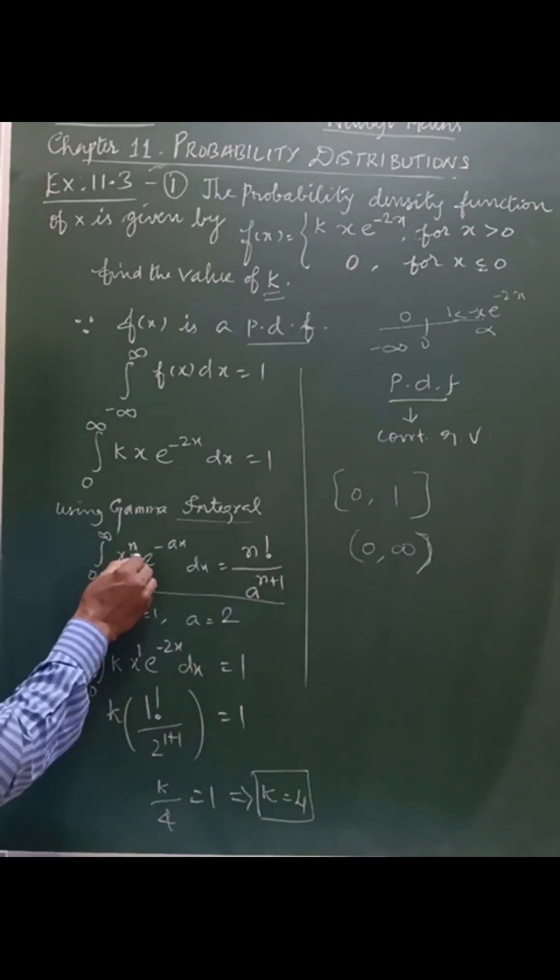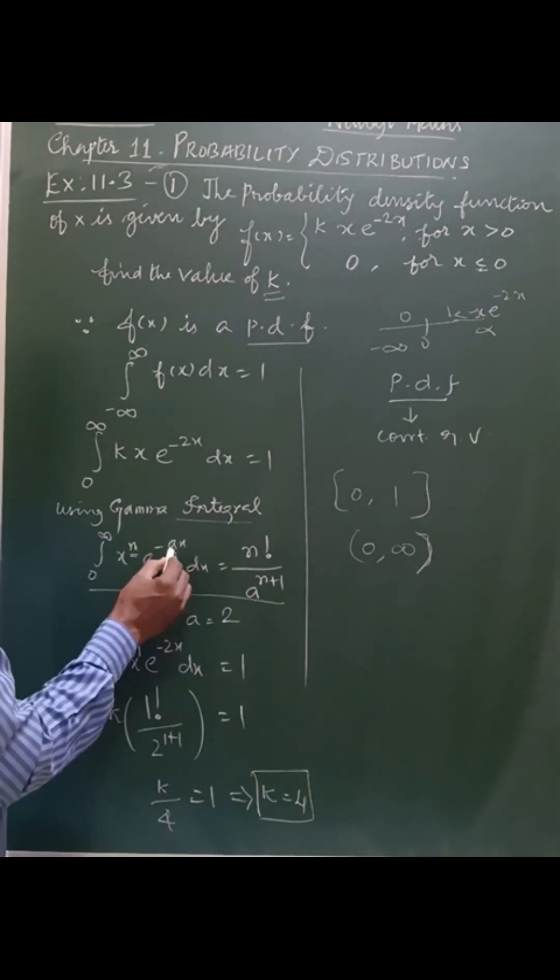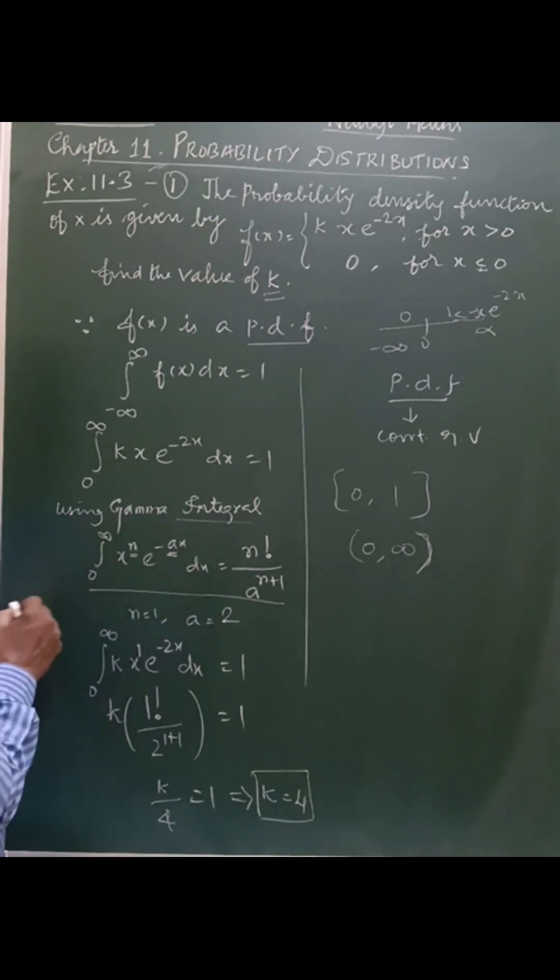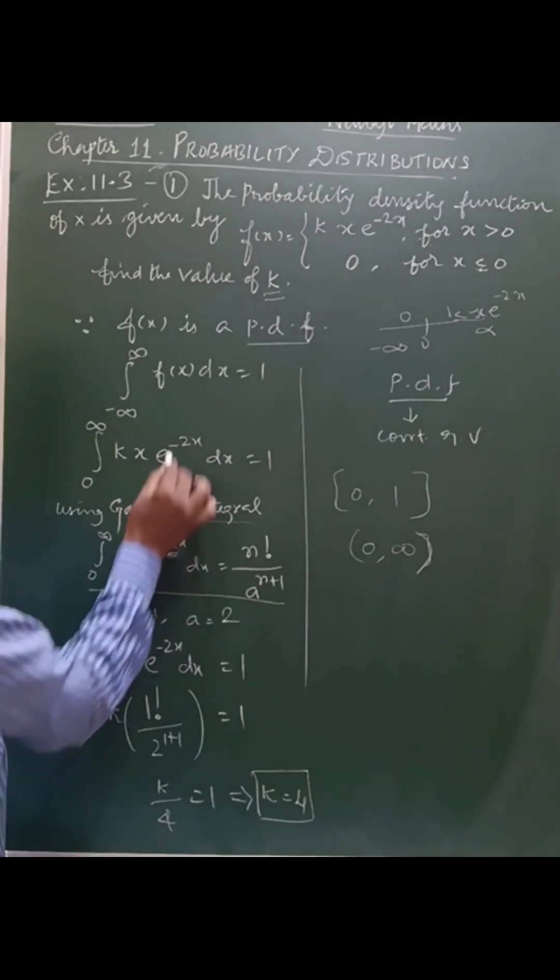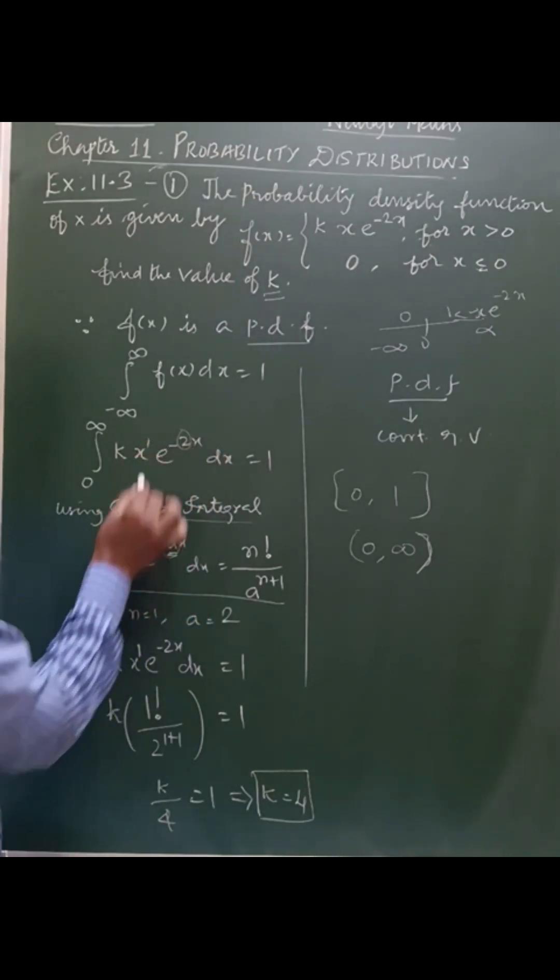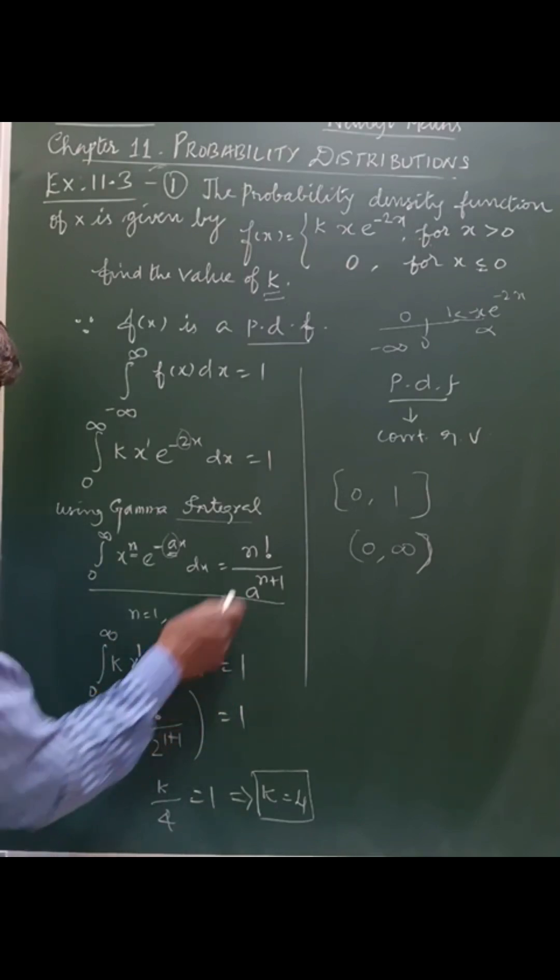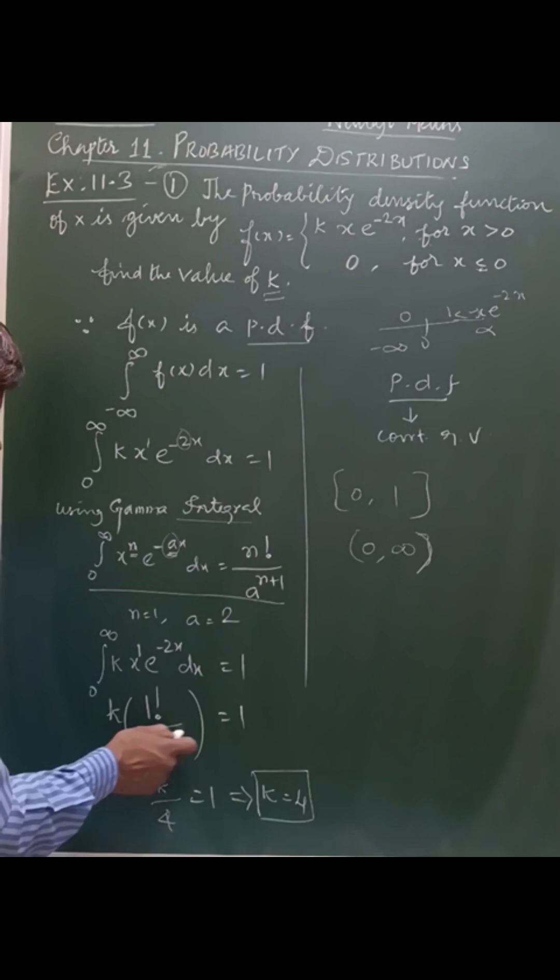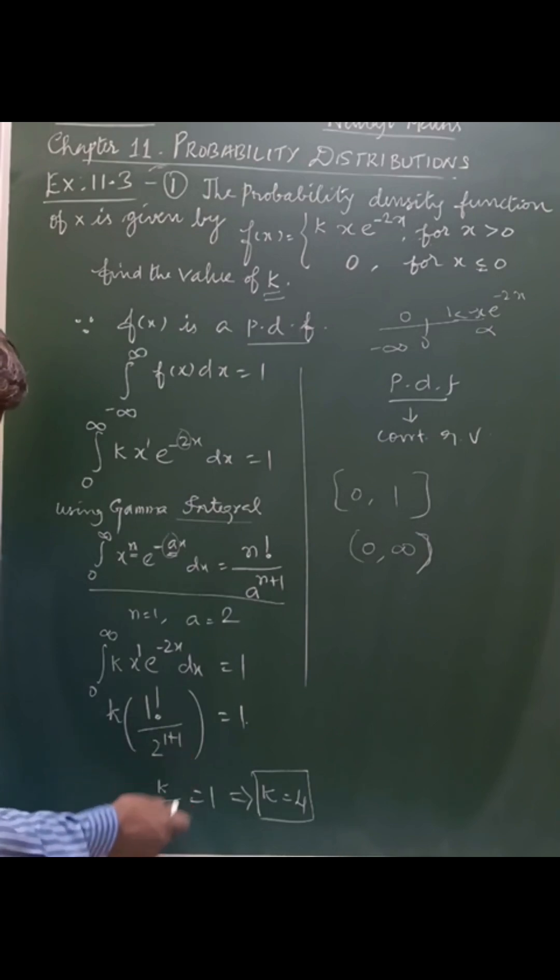Here n is equal to 1, a is 2. So k into 1 factorial by 2 power 2 equals 1. 2 power 2 is 4, so k by 4 equal to 1. The value of k is 4. That's all, thank you.